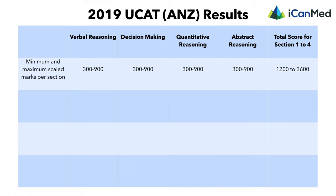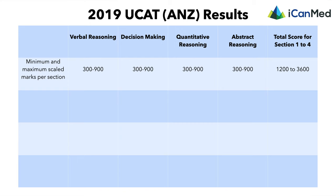Every year UCAT releases data on how the previous year's cohort performed. The 50th percentile total score is 2480 — note that your final score is always rounded to the nearest 10, which is why scores always end in zero. The 90th percentile score is 2840, and that is the score we tell people to aim for as a minimum to guarantee an interview. It's competitive entry, so it won't always be exactly the 90th percentile, but it's a good indicator of what you should minimally be aiming for.